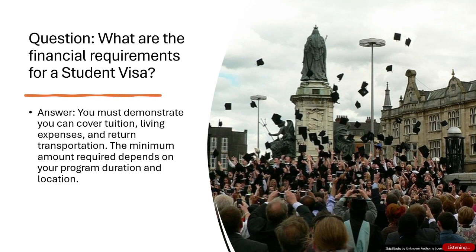Slide 5 — Financial Requirements Question: What are the financial requirements for a student visa? Answer: You must demonstrate you can cover tuition, living expenses, and return transportation. The minimum amount required depends on your program duration and location.